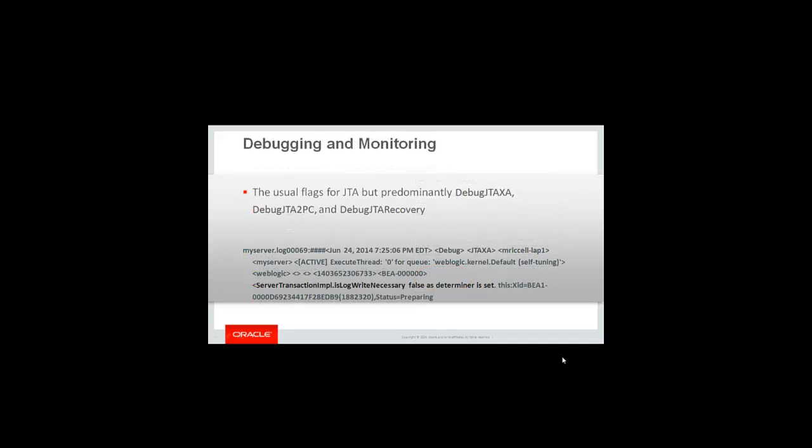How do you know the feature is working? You would use the regular JTA flags: JTA XA, JTA to BC, and JTA recovery. When you look in your server log, you would find a JTA XA log entry that looks like this: 'Server transaction input is logged, necessary: false, as a determiner is set.' This tells you the transaction was not written to the T-log because the determiner was used to determine the recovery outcome.